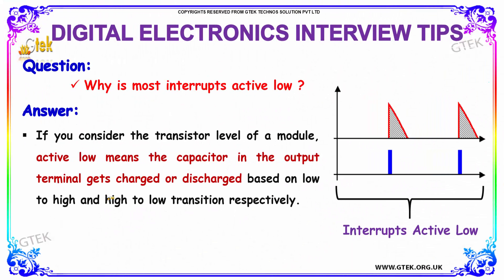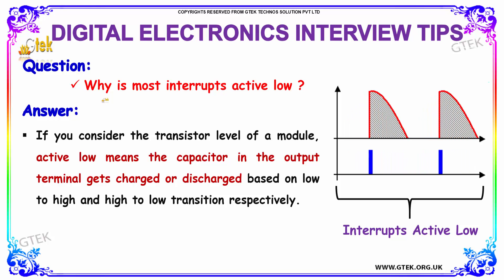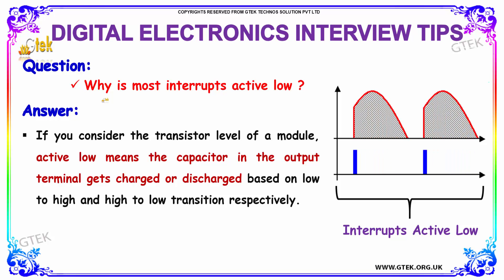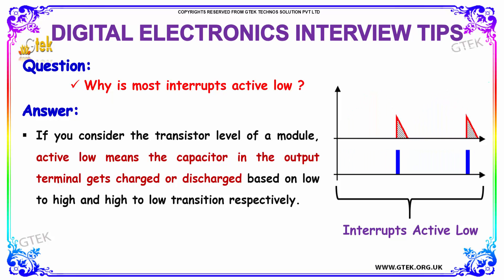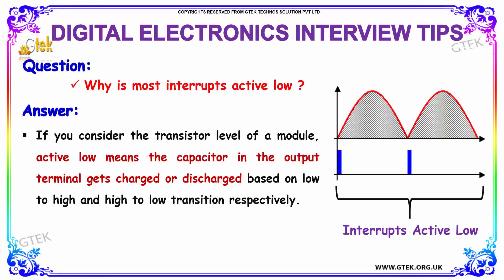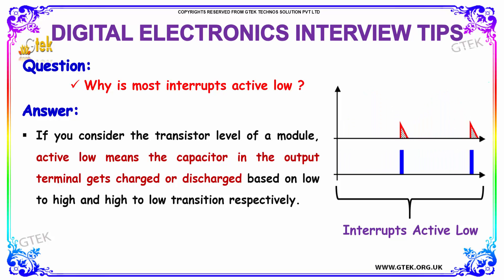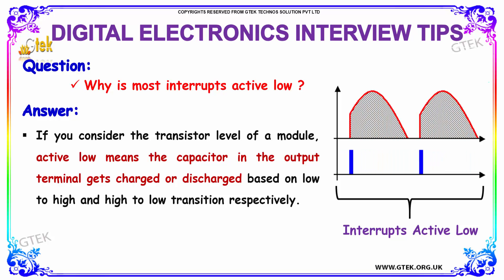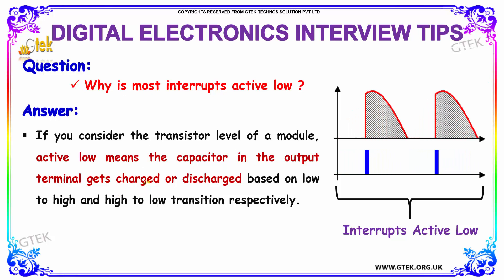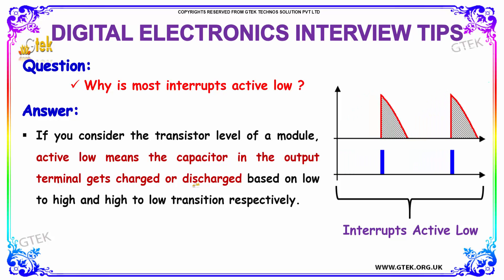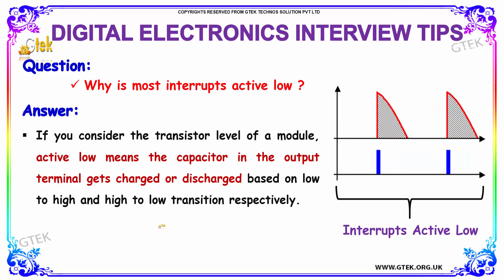The next question is: why are most interrupts active low? If we consider the transistor level of a module, active low means the capacitor in the output terminal gets charged or discharged. These are occurring based on low-to-high and high-to-low transitions respectively.